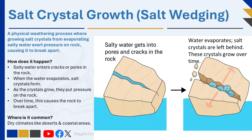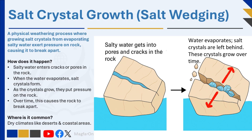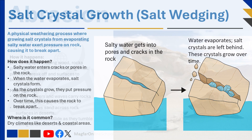When the water evaporates, salt crystals are left behind. As these crystals grow, they exert pressure on the surrounding rock, eventually causing it to break apart. This process, known as salt wedging, is most common in dry climates like deserts.